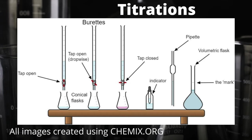You'll notice that I've labelled the mark on the neck of the volumetric flask on the right-hand side. When adding deionized water to the volumetric flask to prepare your standard solution, you would make sure to fill up to this mark with the meniscus of your solution sat on the marked line. You could even use a dropping pipette to help you do this as it's quite tough.